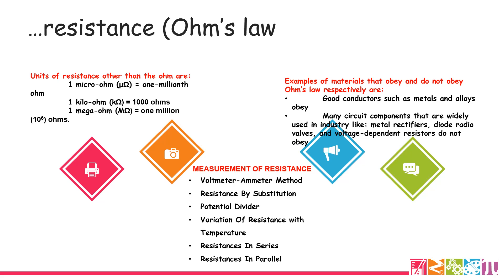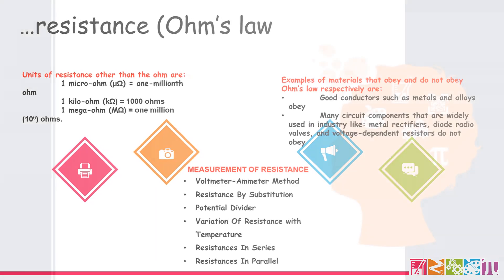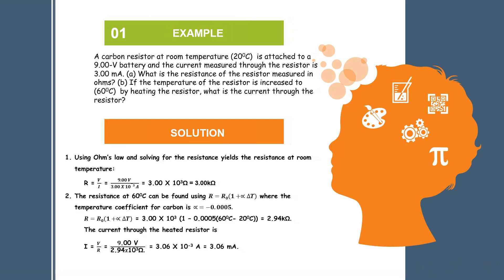Examples of materials that obey and do not obey Ohm's law: good conductors such as metals and alloys are materials that obey Ohm's law. Some circuit components widely used in industries — such as metal rectifiers, diode radio valves, and voltage-dependent resistors — do not obey Ohm's law. Methods used in measuring resistance include: the voltmeter-ammeter method, resistance by substitution, potential divider, variation of resistance with temperature, and resistances in series.